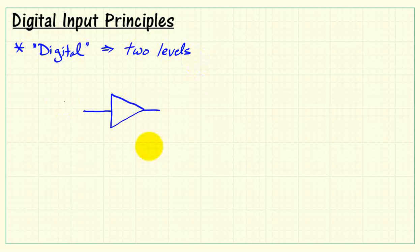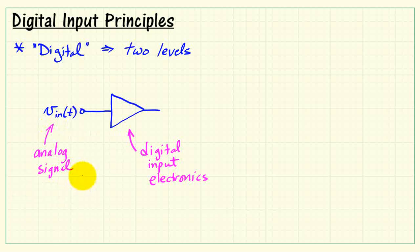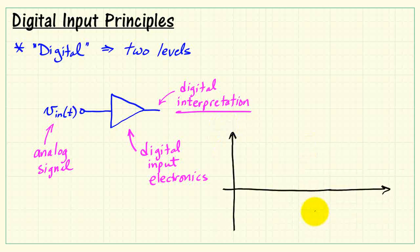Let's review some basic principles associated with digital inputs. When we say the word digital, that suggests two discrete levels of a signal. I'll use this triangle to denote the input electronics for a digital input, and I'll keep track of the actual input voltage as V_in(t). This is always an analog signal, regardless of whether you say it's digital or analog. What makes it digital really is the interpretation of that analog signal.